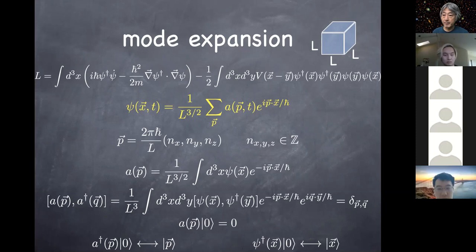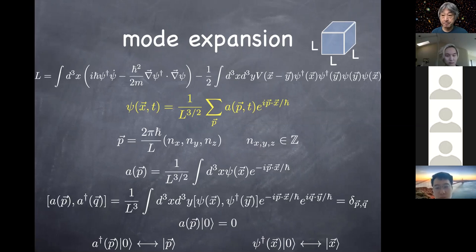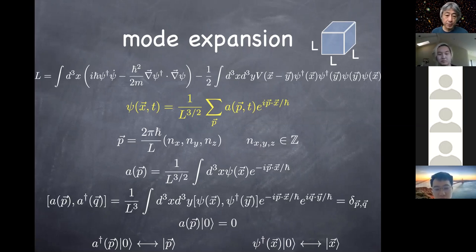What defines a creation operator is simply the commutation relation. The commutation relation between a and a-dagger being one is what defines annihilation and creation operators. There are different variants — we have it in momentum space, in position space, and also the standard a and a-dagger from the simple harmonic oscillator.